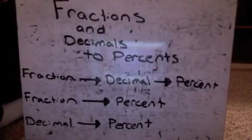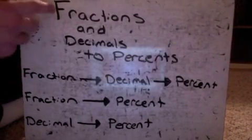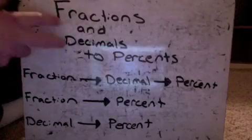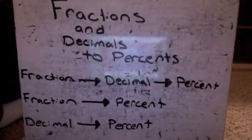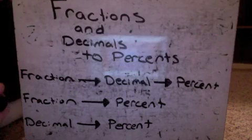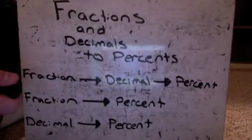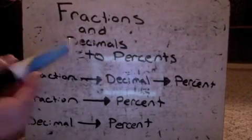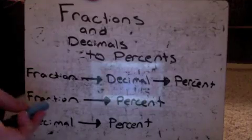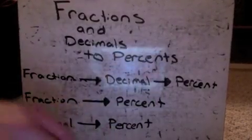We're going to get our first taste of turning fractions and decimals into percents. We've already turned fractions to decimals and then decimals back to fractions, but now we're going to take both of them and turn them into percents. I'm going to take you through three ways to do this. I'm going to show you how to go from a fraction to a decimal to a percent, how to go straight from a fraction to a percent, and then how to go straight from a decimal to a percent.